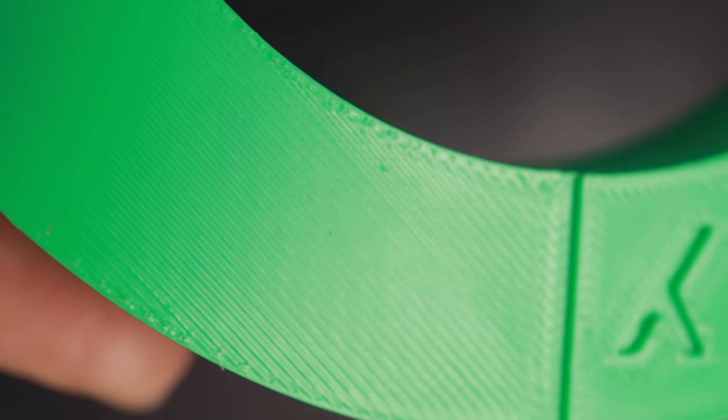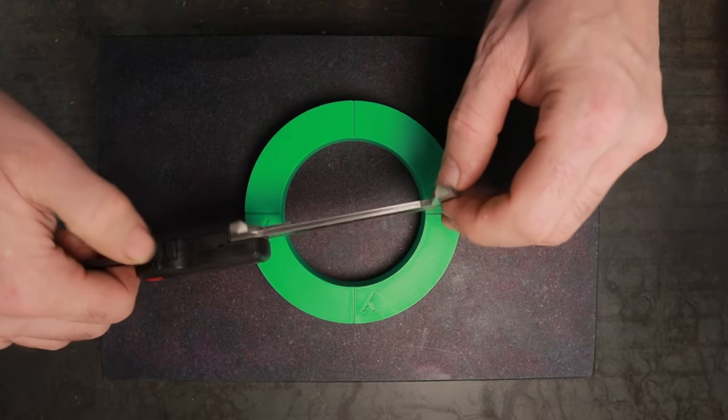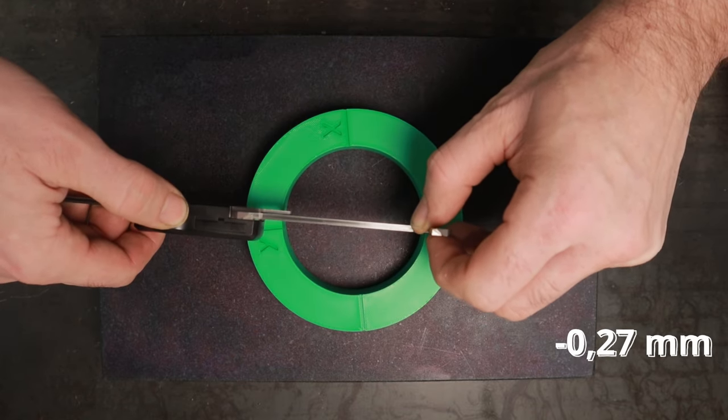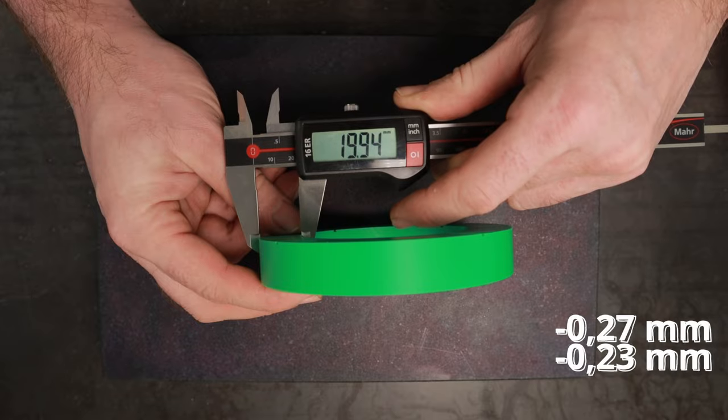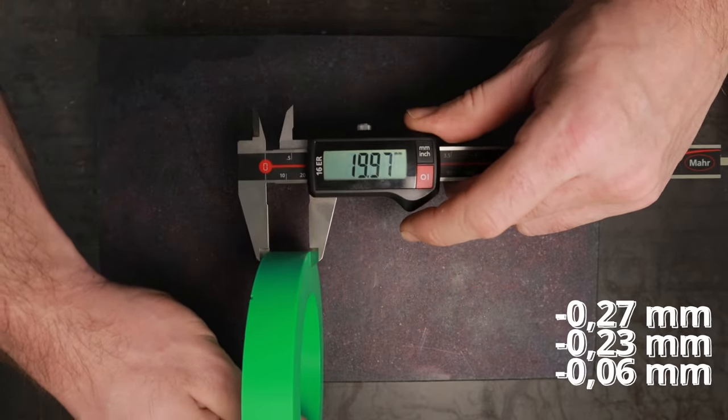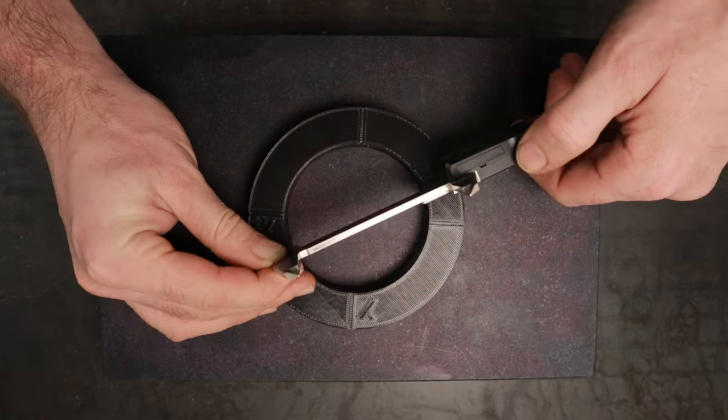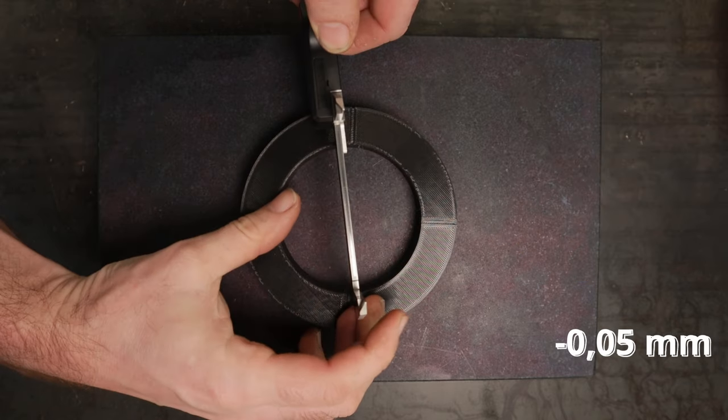And the print quality is of course better with X1C. But we are also comparing a printer that costs 150 with a printer that costs 1500. But how about precision? Well, all the dimensions are shorter from the Bamboo. But there is a similar difference between X and Y, which is good. And the Ender is more precise. Yes, you heard me right.